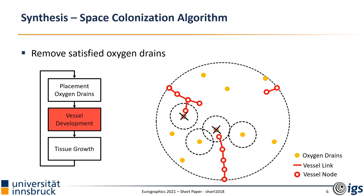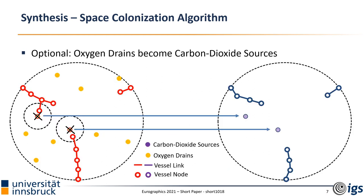Instead of simply discarding these oxygen drains altogether, we reuse them as initiators for the development of the venule system. The idea is based on the function of the venule system to transport waste products away from the tissue. So we relabel satisfied oxygen drains as carbon dioxide sources and let the venule system grow in the same manner as the arterial one.